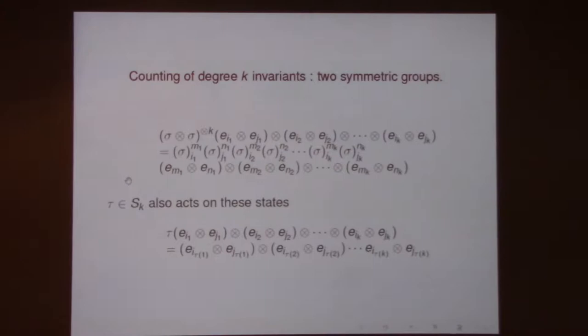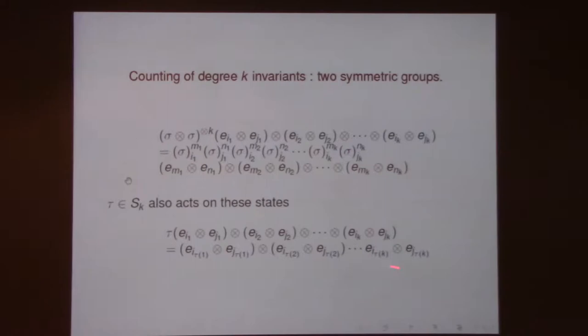There is an explicit formula for how S_K acts and for how S_D acts. Once you have those, to count the space of invariants, you just project: project to the invariant subspace of S_K, and to the invariant subspace of S_D. There's an explicit formula — to project to the invariant of anything, you sum over the group elements. And what is the character? It follows from the fact that trace of σ is the number of one-cycles.